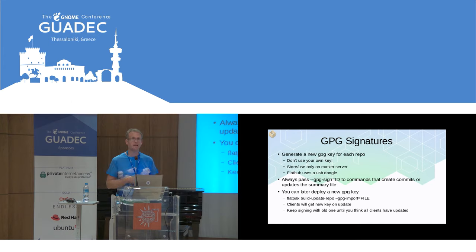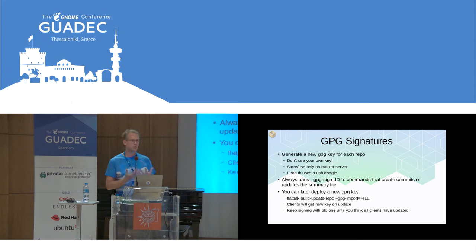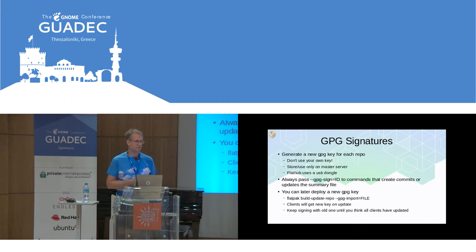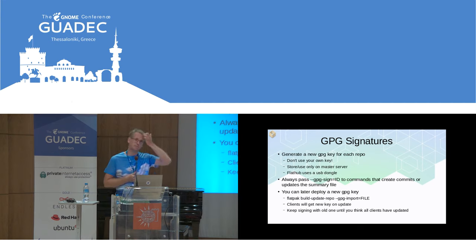Don't use your own personal key first of all. It's very easy to use your existing private key for everything, but it's a very bad idea if you ever want someone else to maintain the thing or need to rotate your key. Basically what you want to do is create a new GPG key every time you start a new repository, and that key should only be available on the master server. Even better — use some hardware token. We have a USB dongle on the Flathub servers so the private key is never visible on any machine.